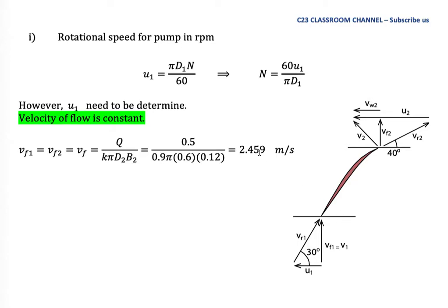For the first question, we calculate the rotational speed. The relevant equation is U = πdN/60. It is better to use values at point 1 because the inlet velocity triangle is simple. Rearranging gives N = 60·U1 / (π·d1). To solve this we need the value of U1.